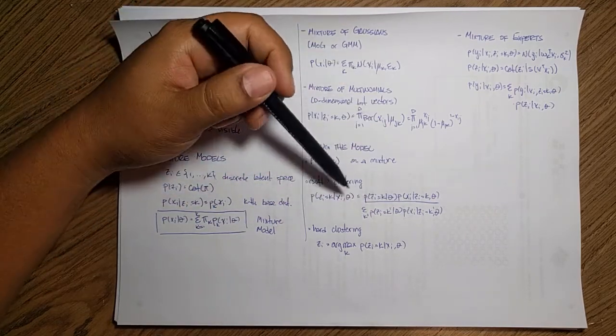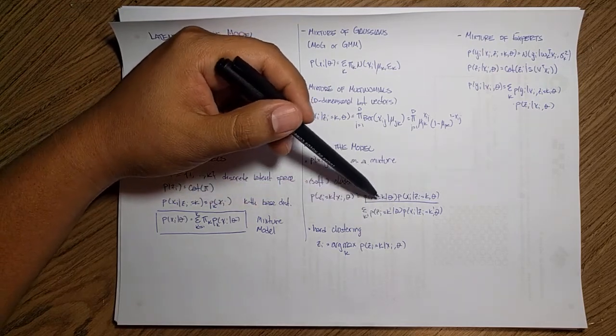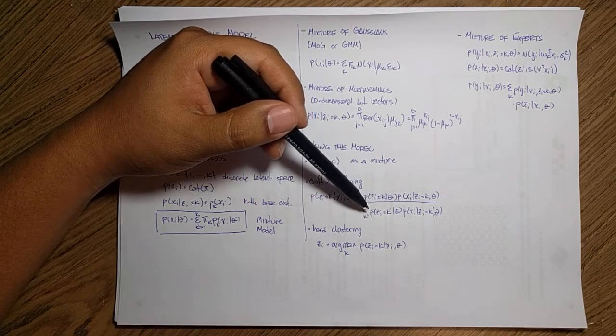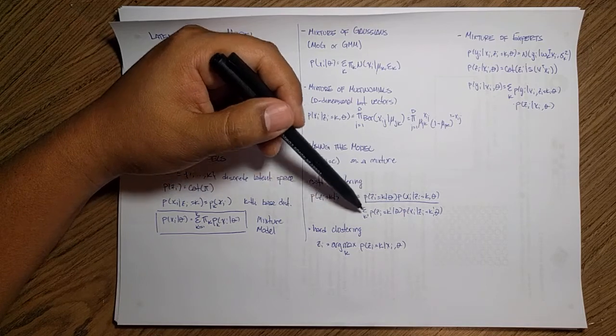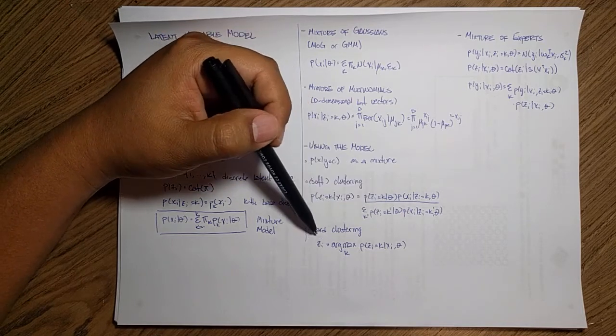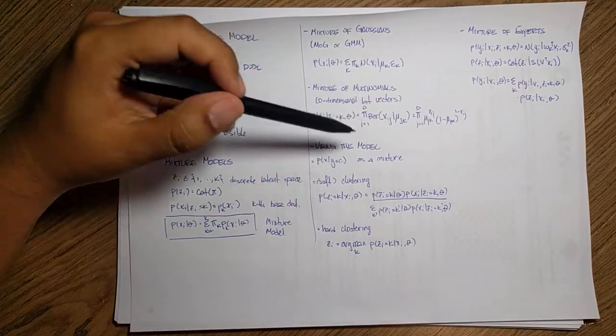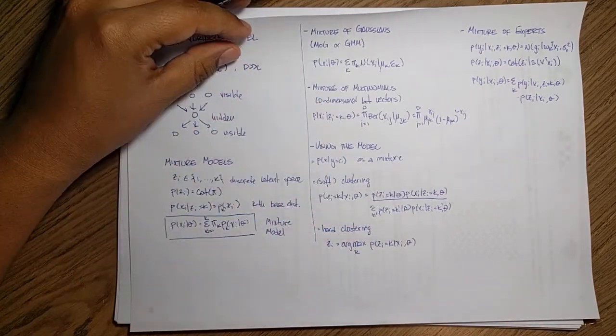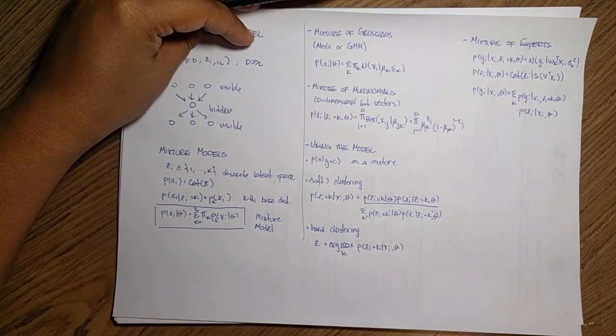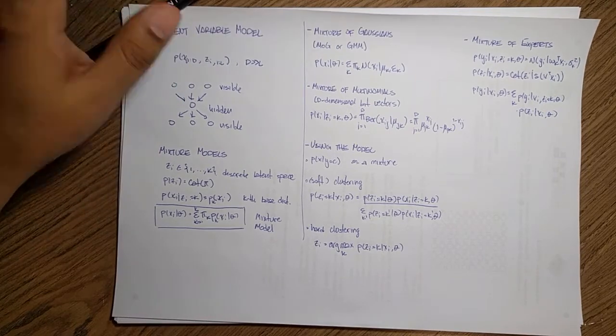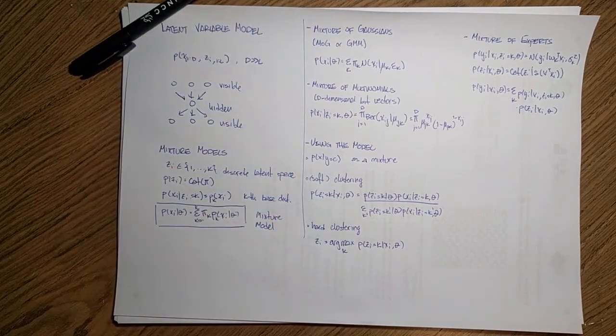And if you want to have a hard cluster, because this would be a number, a probability of belonging to that particular cluster. If you want to have a hard assignment, you can just simply take the arg max of this value over here. And that will give you a really nice approximation on how to approach these particular problems.